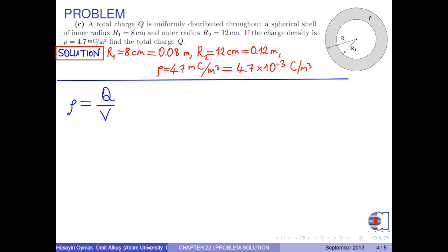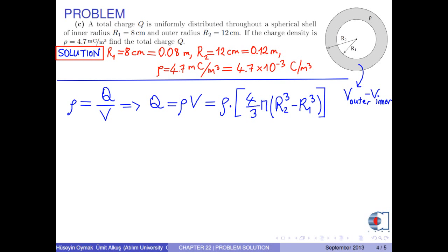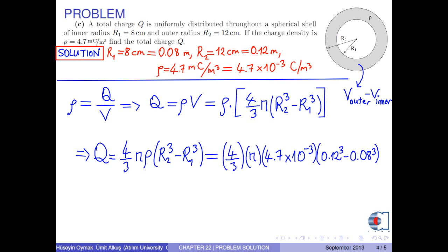From this, we obtain the total charge as rho times V. The volume of the spherical shell is the difference of the volumes of the outer and inner spheres, that is 4/3 times π times (r2³ minus r1³). So Q equals 4/3 times π times rho times (r2³ minus r1³). Now we insert the numerical values into this formula. We obtain the total charge as approximately 2.39 times 10 to the negative 5 coulombs, or 23.9 microcoulombs.